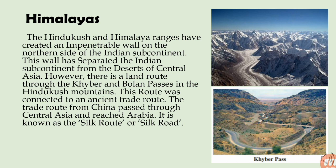The Hindukush and Himalaya ranges have created an impenetrable wall on the northern side of the Indian subcontinent, separating it from the deserts of Central Asia. However, there is a land route via the Khyber and Bolan passes in the Hindukush mountains. This route connected to an ancient trade route — the trade route from China passed through Central Asia and reached Arabia, known as the Silk Route or Silk Road. Silk was the main commodity exported westward using this route. Many foreign invaders used the passes to enter ancient India, and many foreign travelers also came to India by this route.